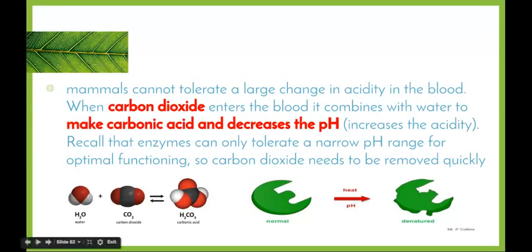So as we can see here, we have our water molecule combining with our carbon dioxide molecule to form that carbonic acid, which causes the decrease in the pH of the blood. And then what happens is our enzyme, with its active site here, changes, so it denatures, so the active site no longer is the same shape, so it won't be able to fit the substrate that it usually fits with.